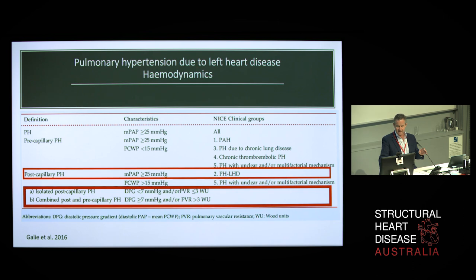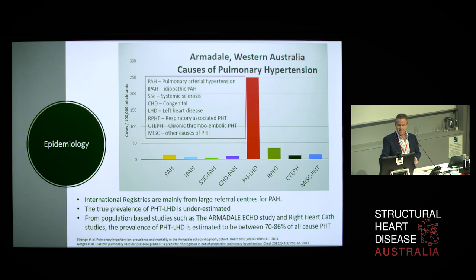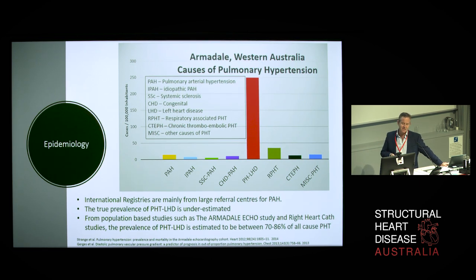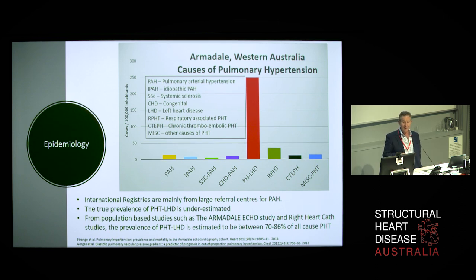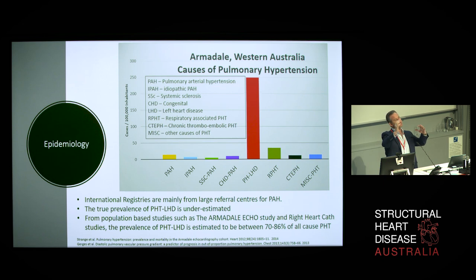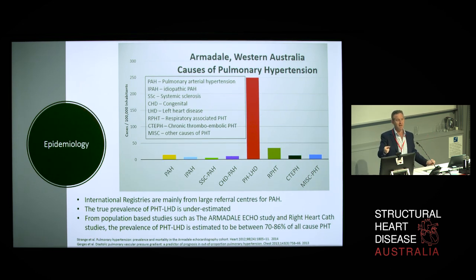So the first point I wanted to make is about the hemodynamics and how you tell. The second point is this one. The red bar is pulmonary hypertension due to left heart disease — another of Jeff's studies from the Armadale study. The green bar is respiratory-related pulmonary hypertension, and they swamp everything else. Jeff showed that the prevalence of pulmonary hypertension, initially estimated at 18 per million, is now 320 per million. What's changed? It's actually the left heart disease. Idiopathic PAH is 18 per million; the red bar is 300 per million.